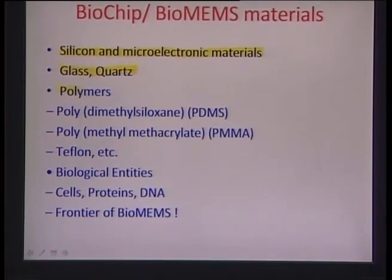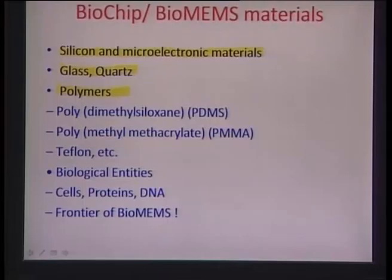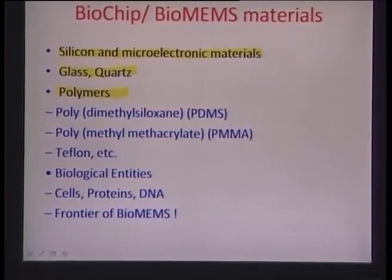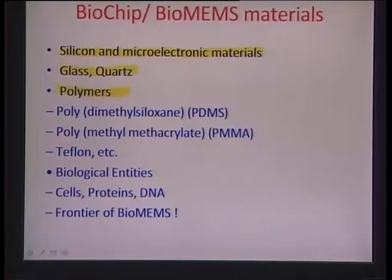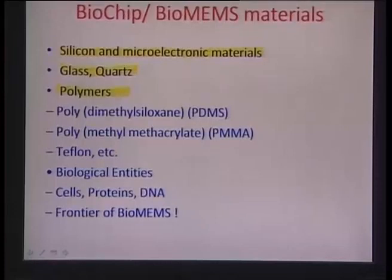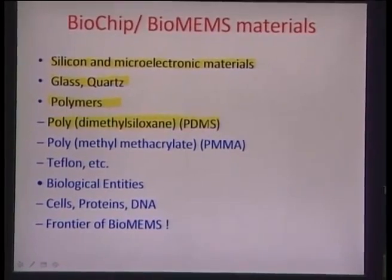Alternate materials like polymers are increasingly important because biological entities tend to be happy in fluidic environments, and in the presence of carbonaceous materials. Polymers being carbon-rich materials, the emphasis of bio-MEMS devices is slowly shifting from silicon-based processes to polymer-based processes. One important aspect of polymers is their ease and inexpensiveness of fabrication. An important polymer used for such techniques is the silicone rubber called polydimethylsiloxane (PDMS), used for replication and molding.